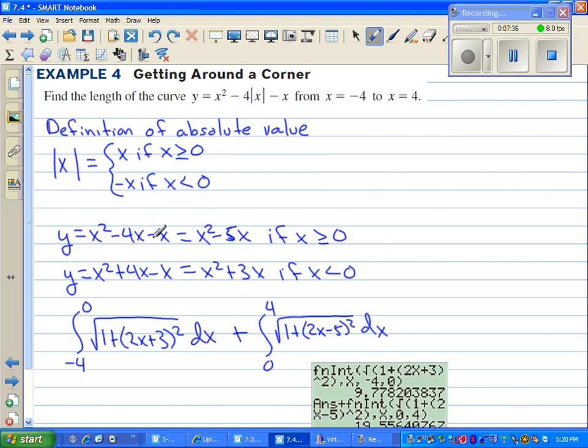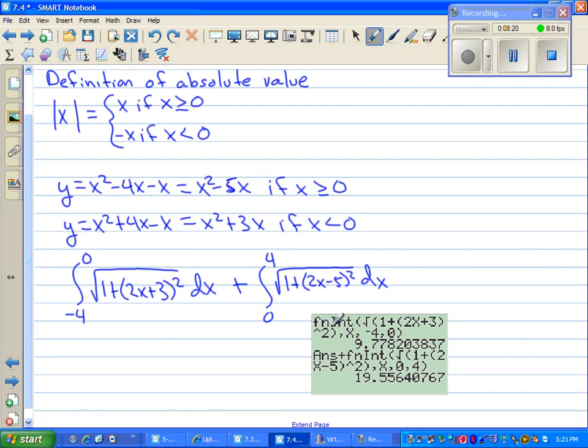So we end up with two equations. y equals x squared minus 4x minus x. If x is positive, this really isn't going to change. So it just becomes x squared minus 5x. Now if x is negative, then this term is going to have an opposite. It's going to be plus 4x. So we have x squared plus 3x when we combine the like terms. Now we just split it from negative 4 to 0. So if our values are negative, we're going to use the derivative of x squared plus 3x. And if the values are positive, if we integrate from 0 to 4, we're just going to use the top one, the derivative of x squared minus 5x. And from there on, we use the calculator.